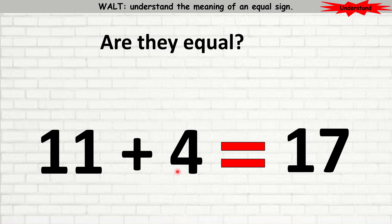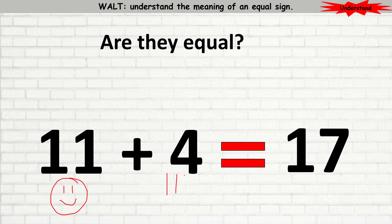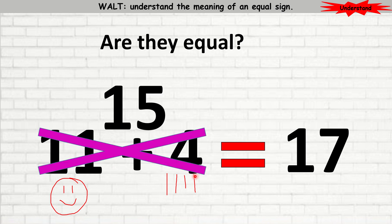Here we have 11 plus 4 is equal to 17. I need to find out if the left-hand side is equal to the right-hand side. So, 11 plus 4 — I'm going to use the count-up method. I'm going to put the bigger number in my mind, hold out 4 fingers, and count up after 11: 12, 13, 14, 15. So 11 plus 4 is 15. Is 15 equal to 17? The answer is no. They are not equal.